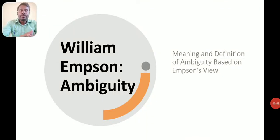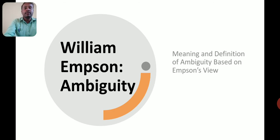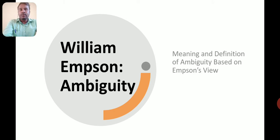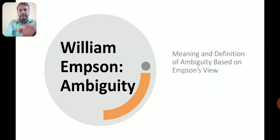Dear learners, we have been discussing William Empson's Seven Types of Ambiguity. As part of the discussion in the earlier session, we discussed William Empson as a critic. In this session, I am going to explain the meaning and definition of ambiguity based on William Empson's view, which is prescribed for BA Fifth Semester Optional English. This is session 46.